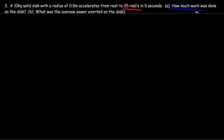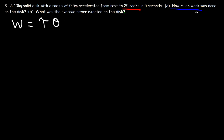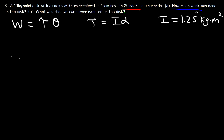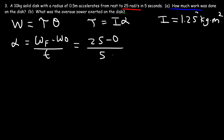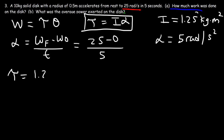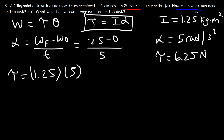Now let's verify using a different approach with the formula work equals torque times angular displacement, where torque equals inertia times alpha. The inertia is 1.25 kg·m². The angular acceleration alpha equals the change in angular velocity divided by time: (25 - 0) / 5 = 5 radians per second squared. So the torque is 1.25 times 5, which gives 6.25 Newton meters.